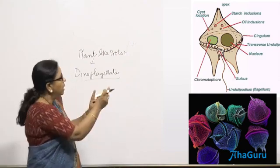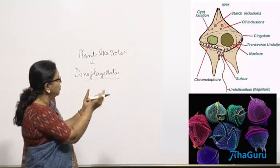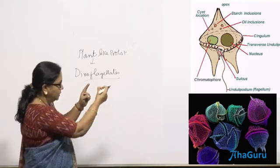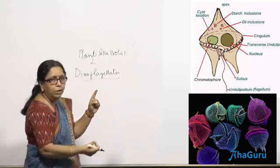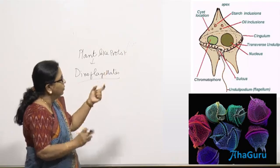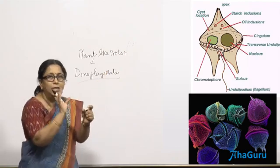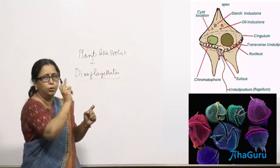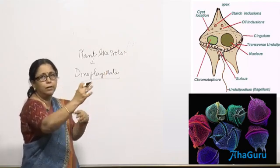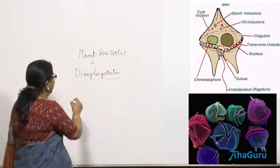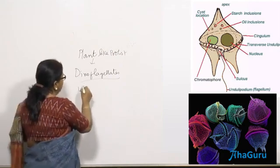One flagellum wraps around its body, and one is coming down. They are called whirling whips because they keep rotating and swimming — so whirling whips of the ocean.